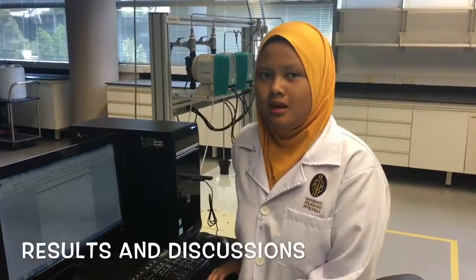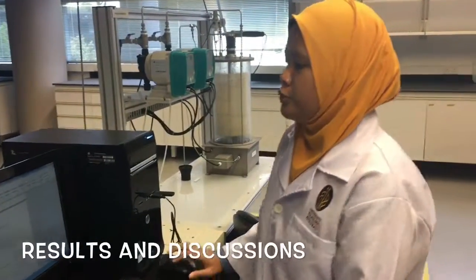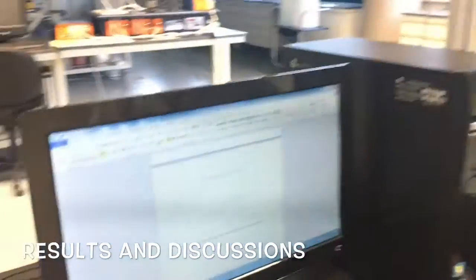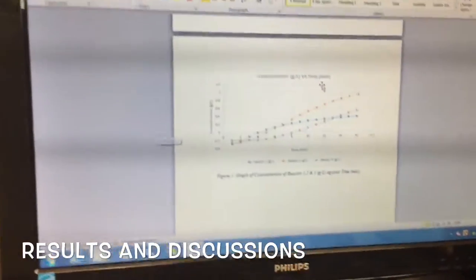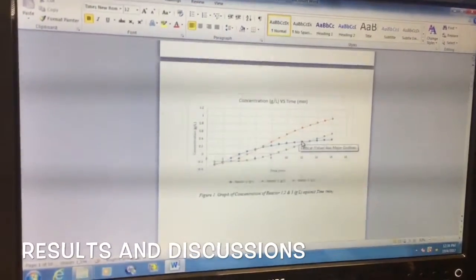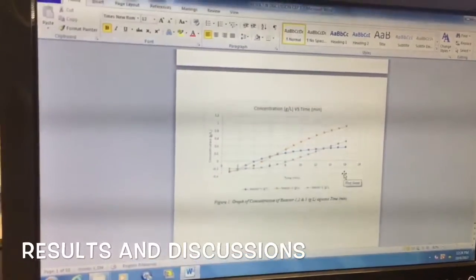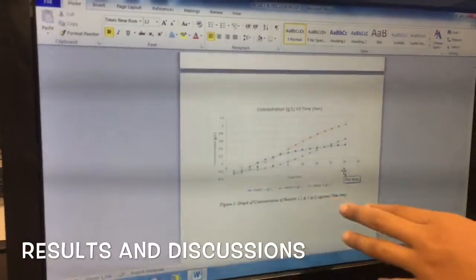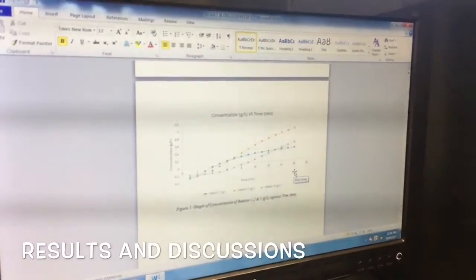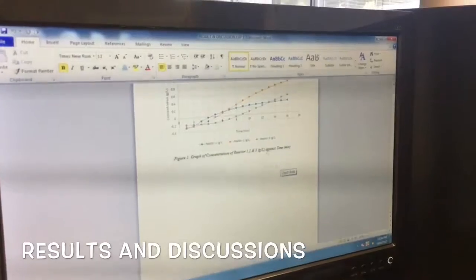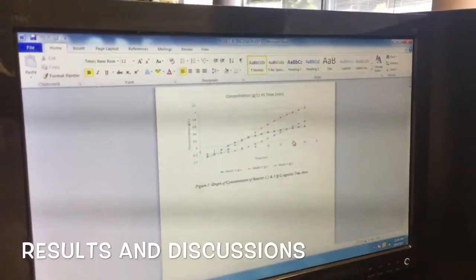My name is Adhika. We are going to go through the results and discussion for our experiment. For experiment A, we investigate the effect of step change on the concentration of sodium chloride. As you can see, the concentration of reactor 1, 2, and 3 increases against time. This is because the sodium chloride is continuously supplied.